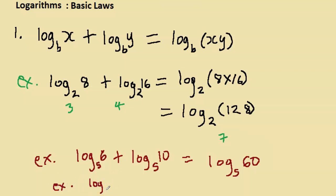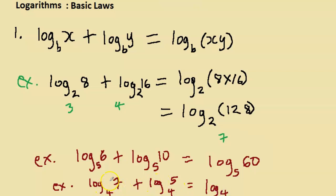One more example: log 7 base 4 plus log 5 base 4. To consolidate into one log, we take the product: this equals log of 7 times 5, which is log 35 base 4. That's what the first law is saying.